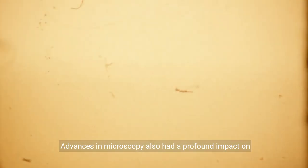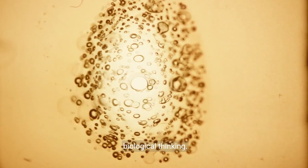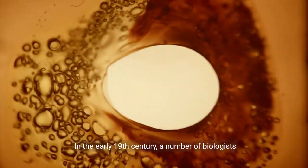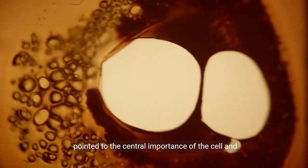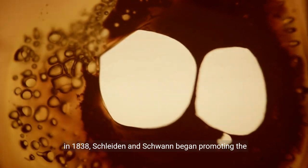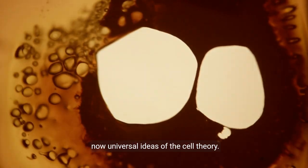Advances in microscopy also had a profound impact on biological thinking. In the early 19th century, a number of biologists pointed to the central importance of the cell, and in 1838, Schleiden and Schwan began promoting the now-universal ideas of cell theory.